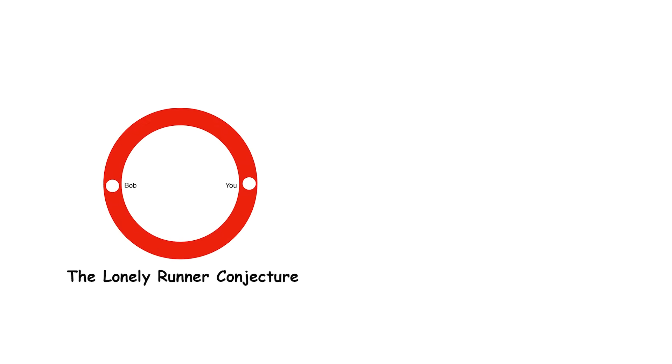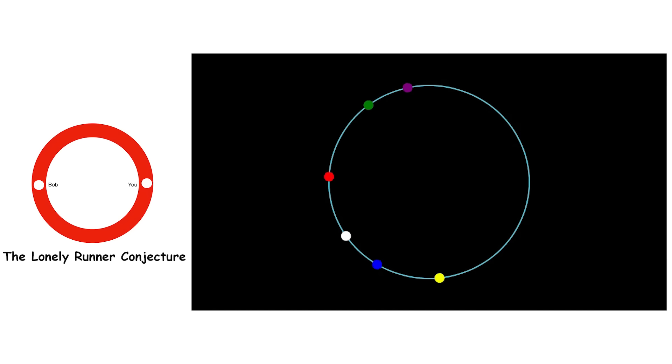The Lonely Runner Conjecture. Assume there are some kids running around a circular track. Each kid runs at a different speed. Now, if a kid gets far enough away from all the other kids, we say that kid is lonely.